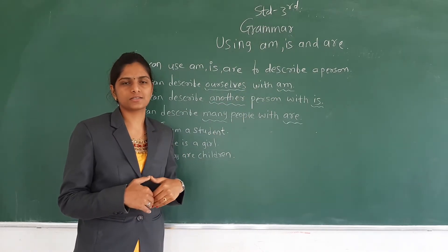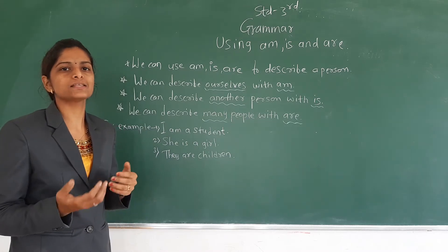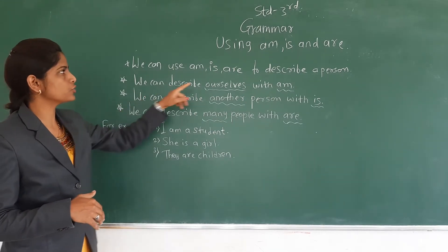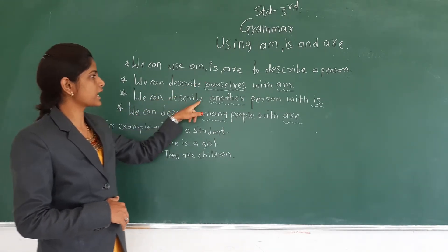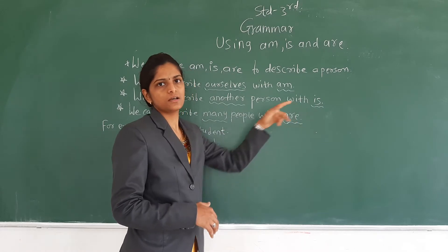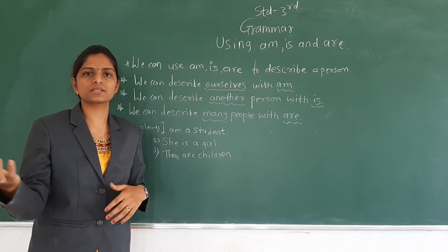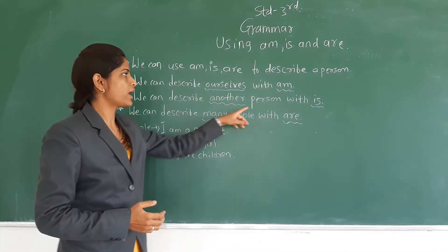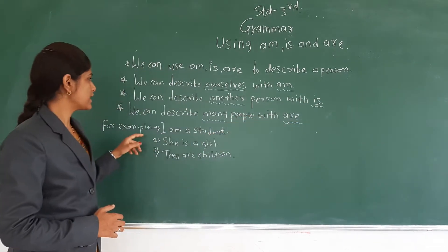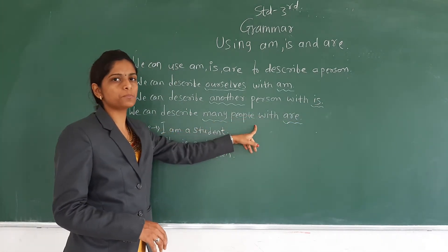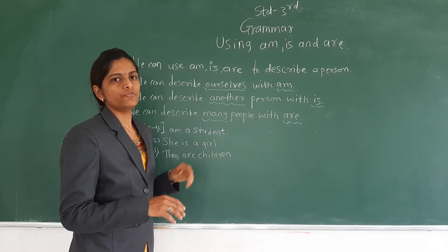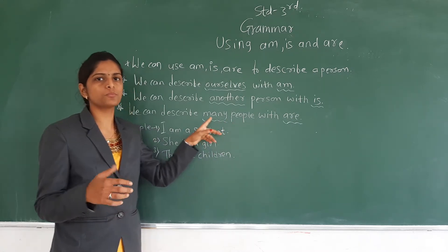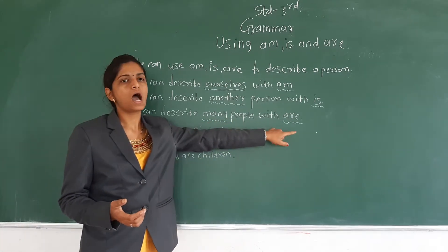Ourselves means for us. If we are telling something about ourselves, we are going to use am. And when to use is — we can describe another person with is. Another person means a different person. If we are saying something about a different person, we are going to use is. And last, we can describe many people with are. When we are going to say something about more than one person, we are going to use are.